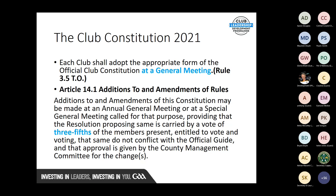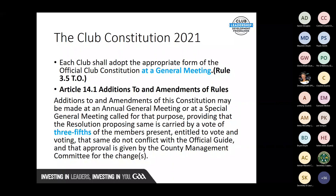For example, the club constitution states that to be eligible to vote, membership must be paid prior to the 31st of March each year. If a club decided to change that to the 30th of April, that can't be allowed because it's in breach of the official guide — Rule 2.1 states all membership must be paid before the 31st of March. That's an example of why amendments to the club constitution must go to the county management committee before they're approved.